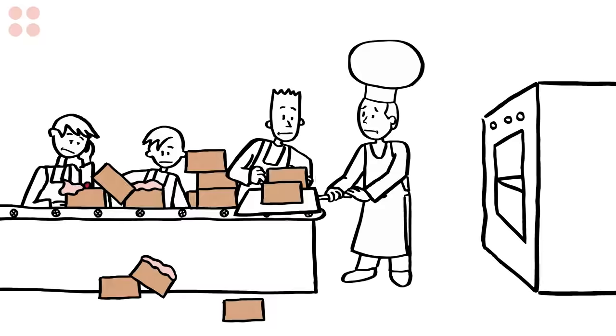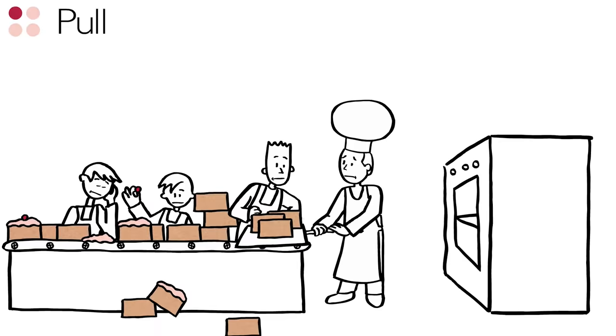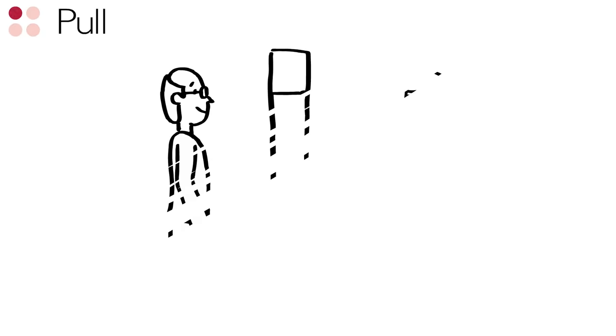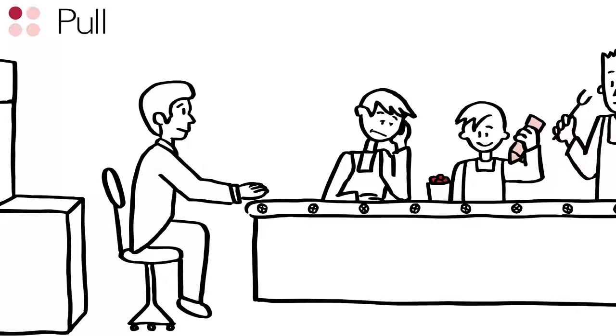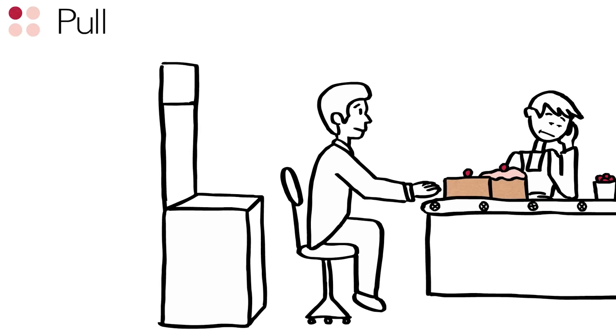Lean management is based on four principles. The first principle is pull. Rather than producing as much as possible, customer demand pulls goods or services through the manufacturing process. This minimizes overproduction, inventory, and ultimately working capital.